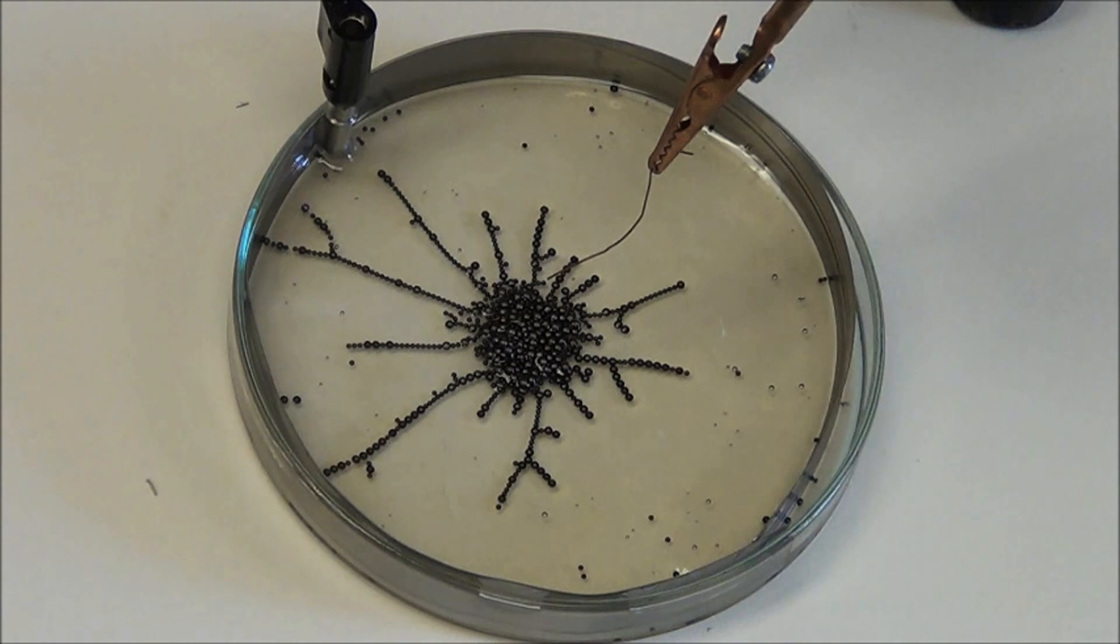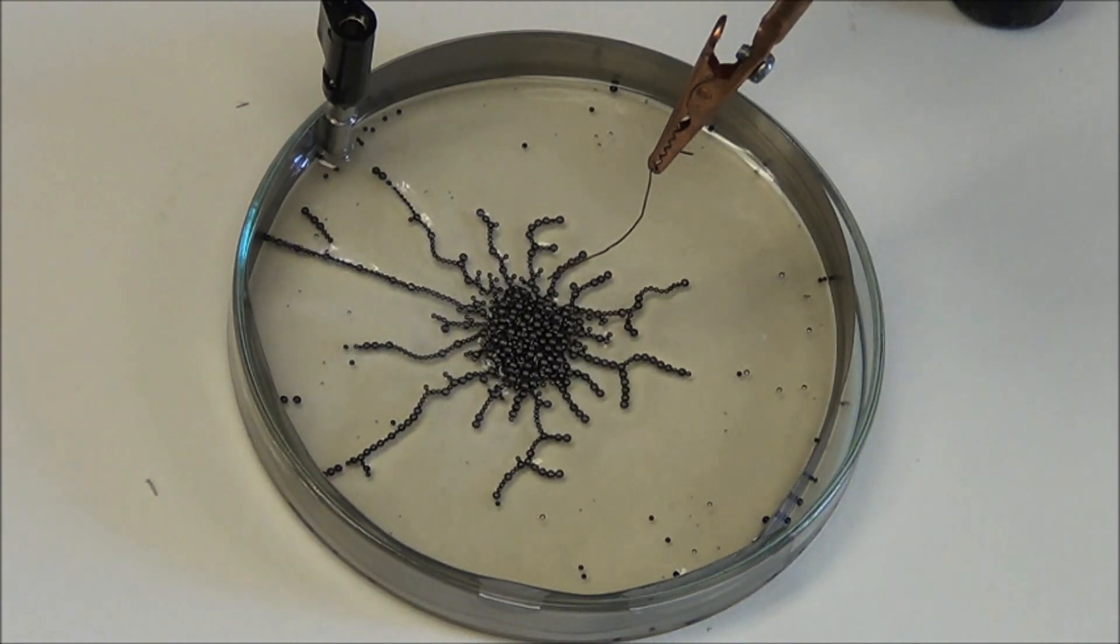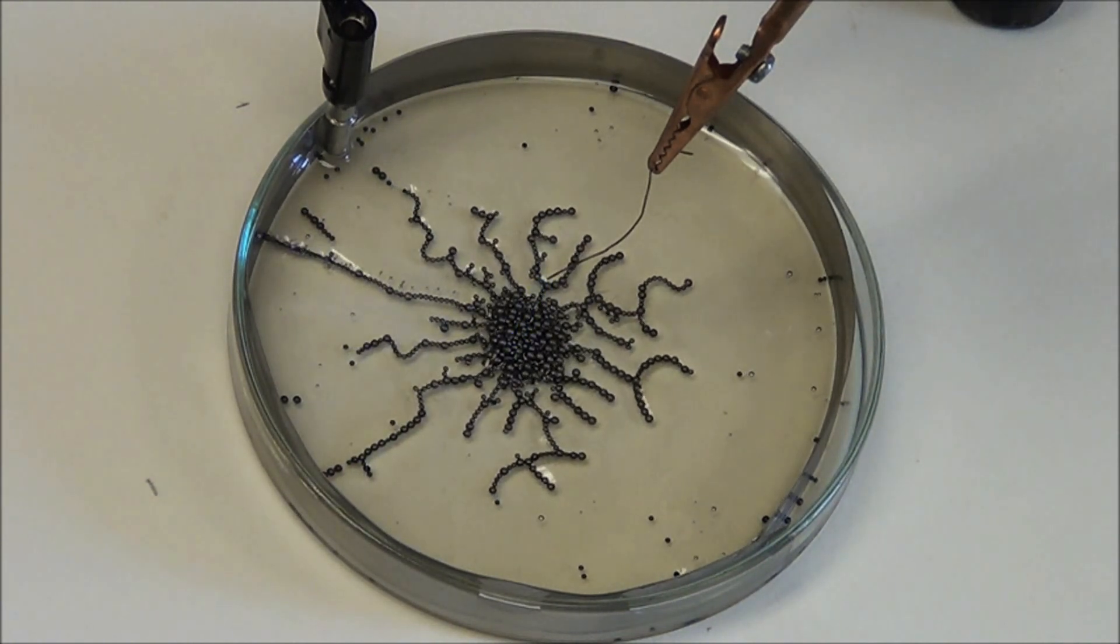When the first chain reaches the rim, something amazing happens. It becomes a stem and all the other shooters die, and a new structure forms.